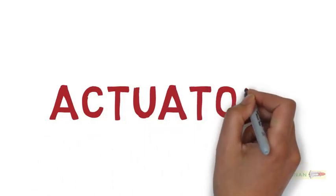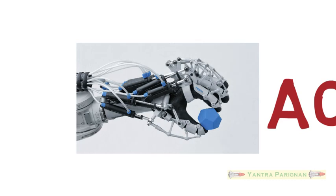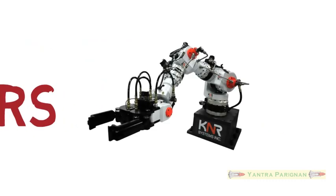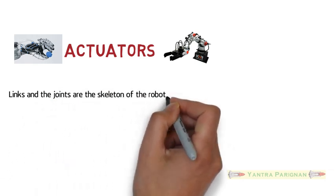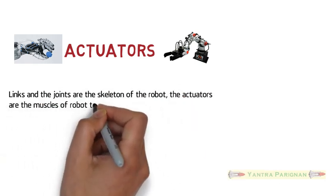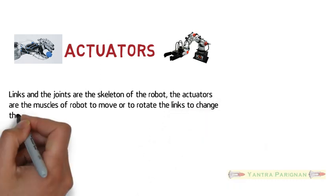For today's class I am going to teach you a brief introduction of actuators, types of actuators, and working principles. Links and the joints are the skeleton of the robot. The actuators are the muscles of the robot to move or rotate the links to change the configuration of the robots.